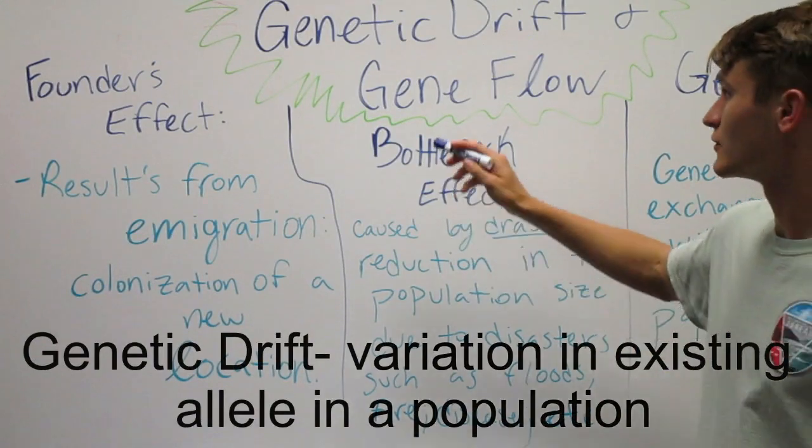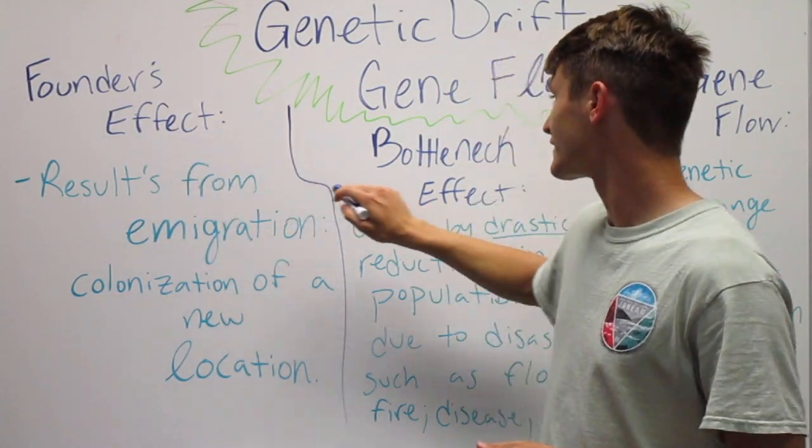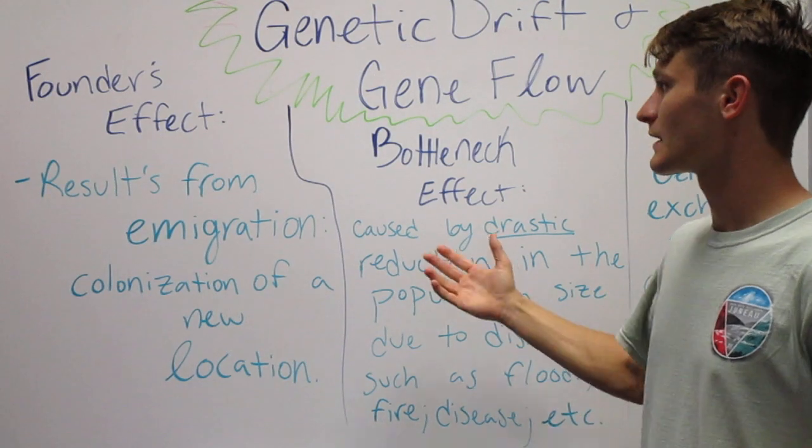The two different genetic drifts are founder's effect and bottleneck effect. So what are they?